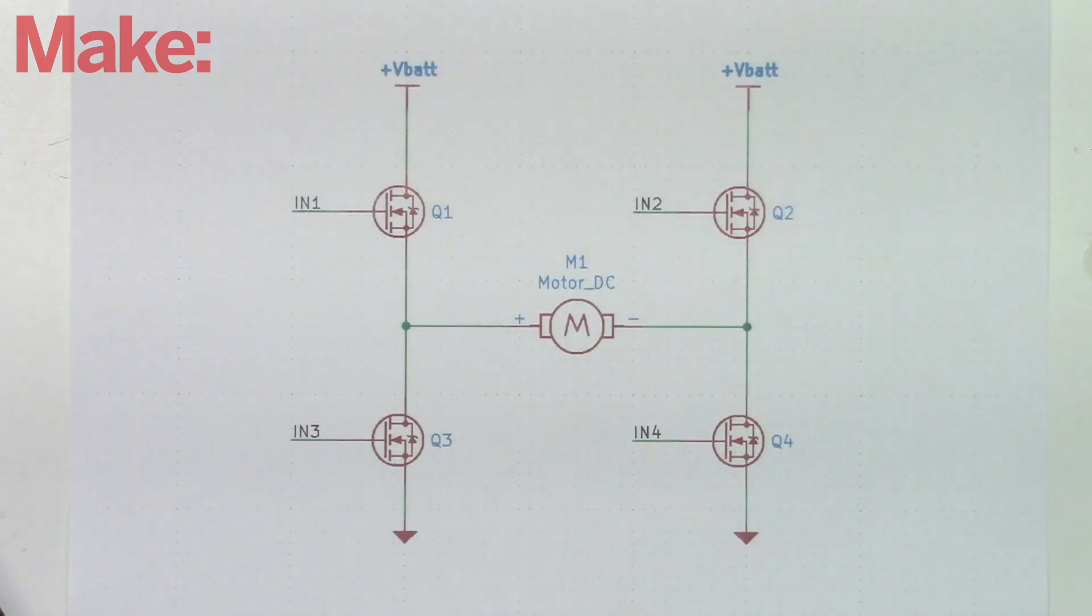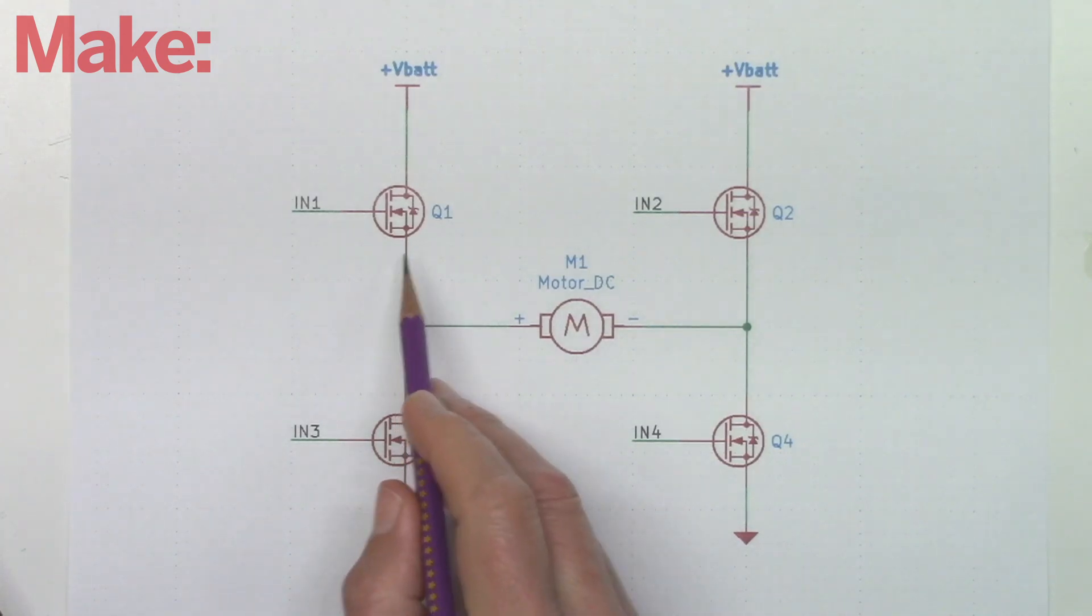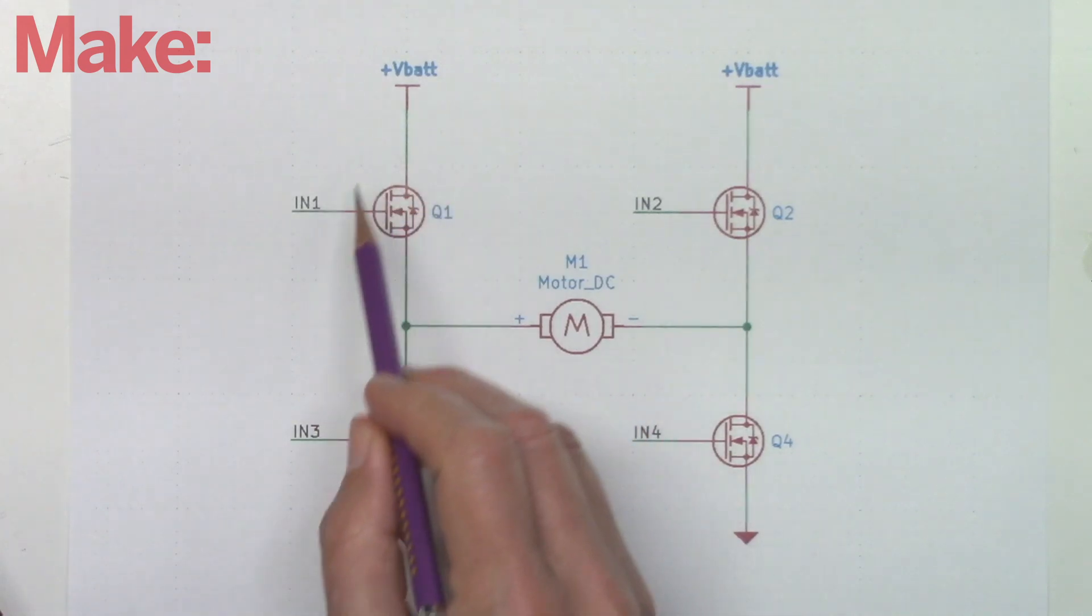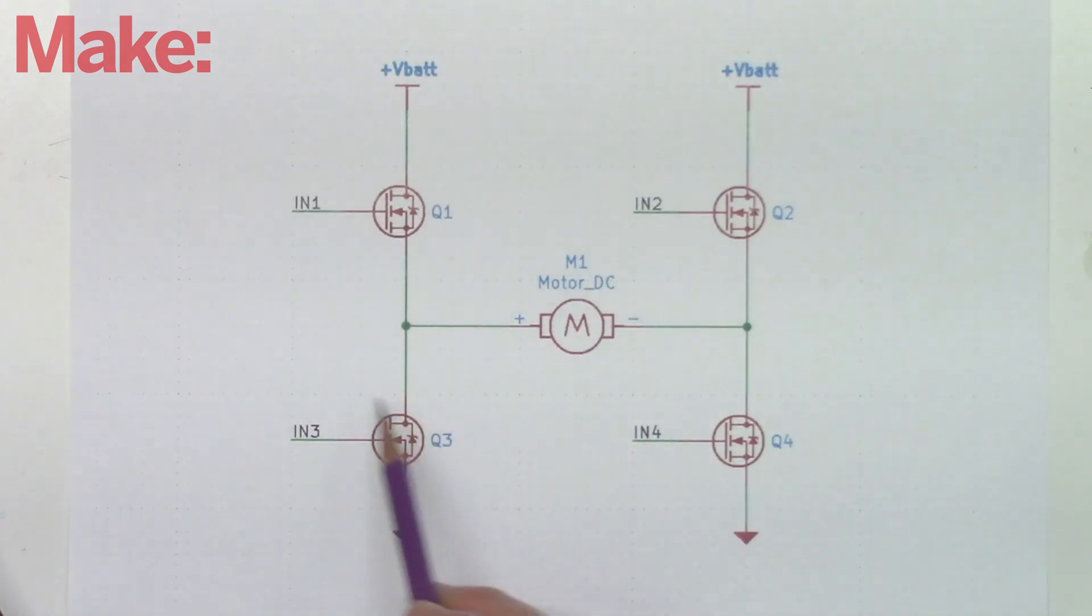An H-bridge is a circuit that allows us to do the same reversal of power to the motor's leads electrically, using four transistors as power switches. Two transistors are connected to each lead of the motor, one connecting the positive power rail and the other connecting ground. Do you see why it's called an H-bridge now?